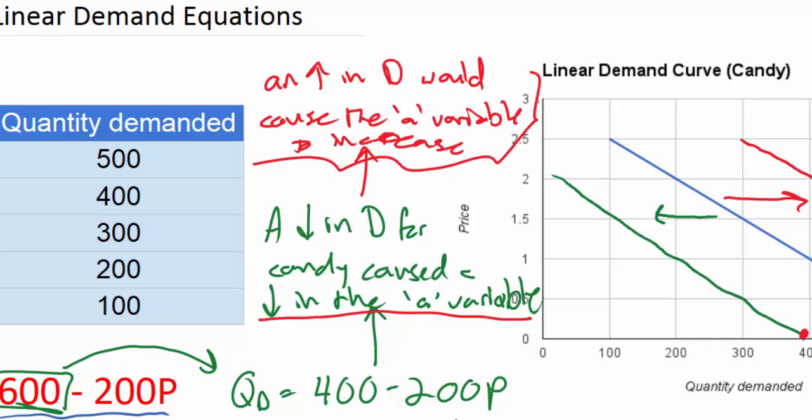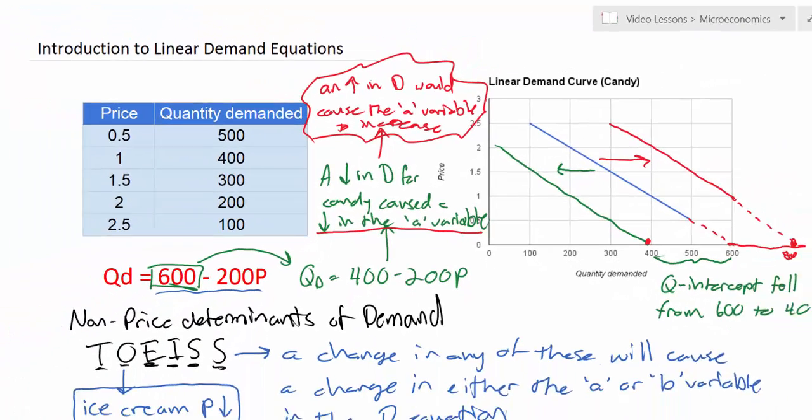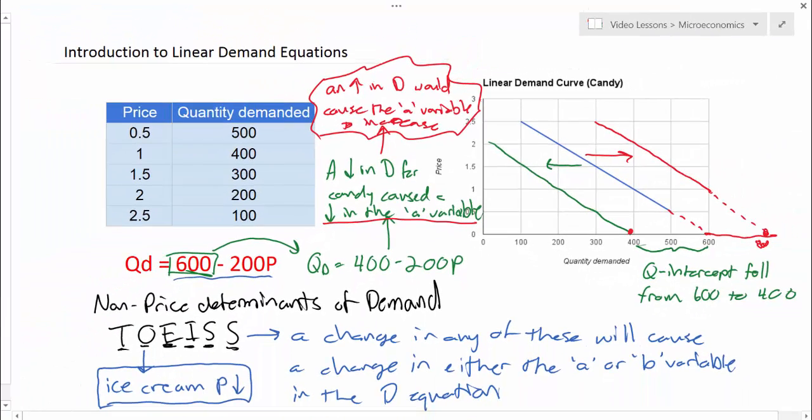Now we've walked through one set of scenarios that could cause an increase or a decrease in the demand for a good and explained how that could affect the quantity intercept of demand. But what we did not do yet was show what could change the slope of the demand curve. What we want to look at in the next and final video in our linear demand equation series is a factor that could cause a change not in the A variable but in the B variable which is the inverse of the slope.